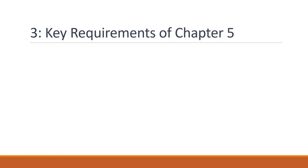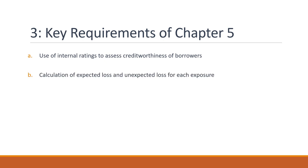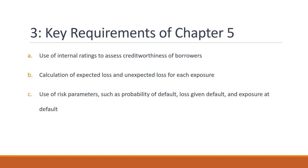Key Requirements of Chapter 5. Now let's take a closer look at the key requirements of Chapter 5. There are several important requirements that banks must adhere to, including: the use of internal ratings to assess the creditworthiness of borrowers and determine risk weights; the calculation of expected loss and unexpected loss for each exposure; and the use of risk parameters such as probability of default, loss given default, and exposure at default.